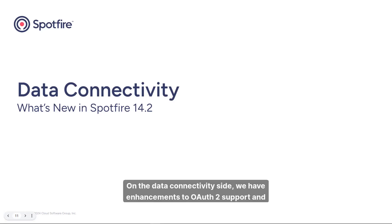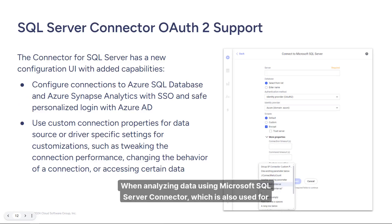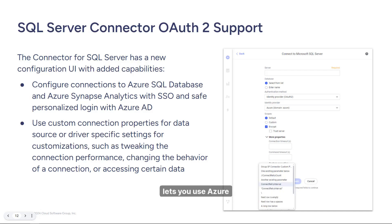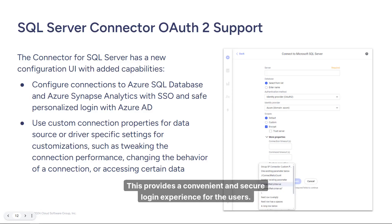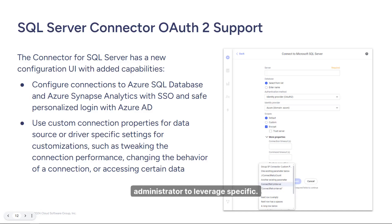On the data connectivity side, we have enhancements to OAuth 2 support and the integration with TIBCO Data Virtualization is also enhanced. When analyzing data using the Microsoft SQL Server connector, which is also used for Azure Synapse Analytics, there are two new capabilities. Most importantly, you can now use OAuth 2 as a secure authentication method, letting you use Azure as an identity provider. We also added the ability to use custom connection properties, useful for tweaking connection settings, configuring encryption, or other custom settings — a toolkit for the Spotfire administrator to leverage specific configuration options for the data source.